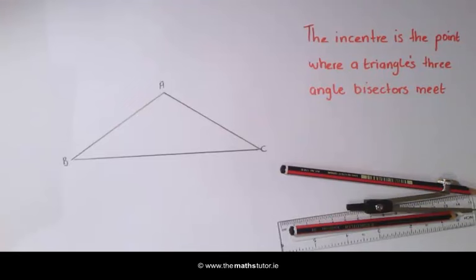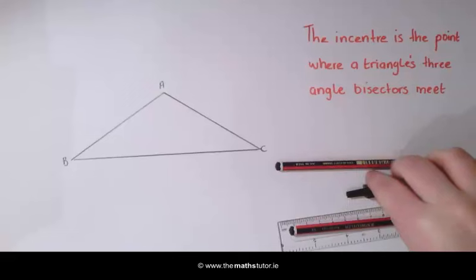The in-center is the point where a triangle's three angle bisectors meet. So first to find the in-center we must bisect two angles of the triangle.